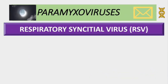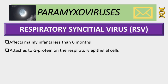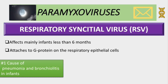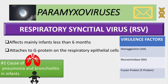Now let's talk about respiratory syncytial virus, or RSV. This virus mainly affects infants less than six months of age. It attaches to the G protein on respiratory epithelial cells. RSV is the number one cause of pneumonia and bronchiolitis in infants. On virulence factors, it has hemagglutinin, neuraminidase, and fusion protein. The fusion protein can be inhibited using the drug palivizumab.